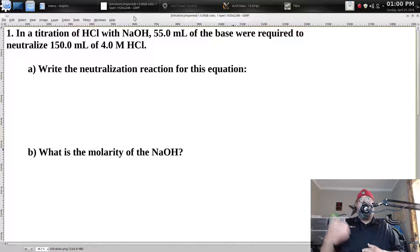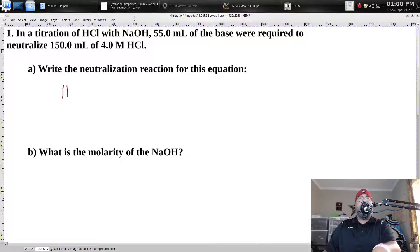So we see the problem here. It says it's a titration of HCl with sodium hydroxide. It's got 55 milliliters of a base. We're required to neutralize it with 150 milliliters of 4.0 molar HCl. Now, the first thing they ask us to do is to write a neutralization reaction for this equation. So let's go ahead and take care of that. So we've got HCl, and we have sodium hydroxide.